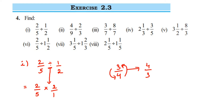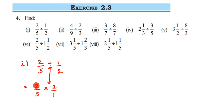So once again: when dividing two fractions, the first fraction remains the same, division becomes multiplication, and you take the reciprocal of the second number. That's it. Now, if possible, we cancel numbers before multiplying; if you cannot cancel, just multiply.